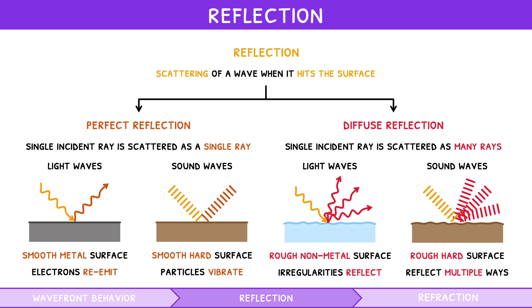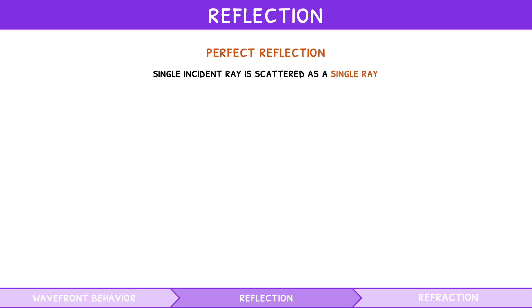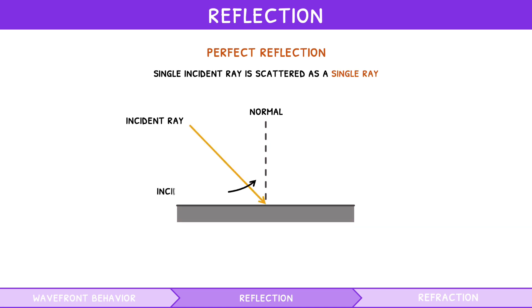In IB physics, you will only see problems involving perfect reflection. So let's look at this in more detail. The rays involved in perfect reflection can be broken down into the incident ray, coming in at an incident angle to the normal theta i, and the reflected ray, leaving at a reflected angle to the normal theta r. These are related by the law of reflection, which states that the incident angle is equal to the reflected angle.